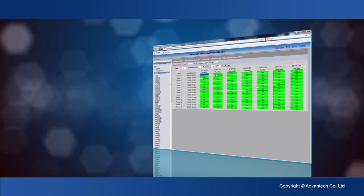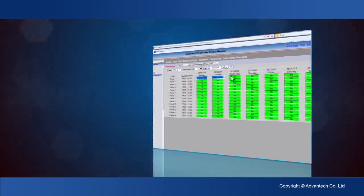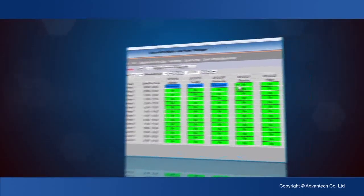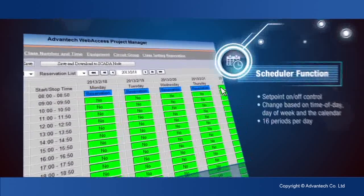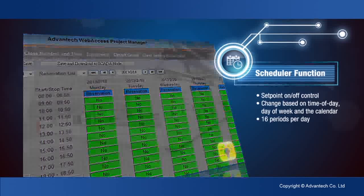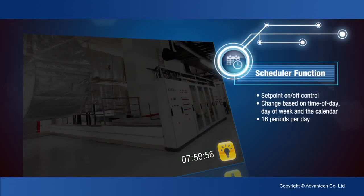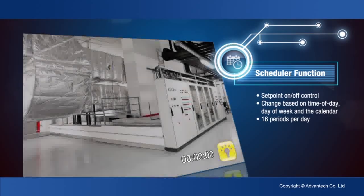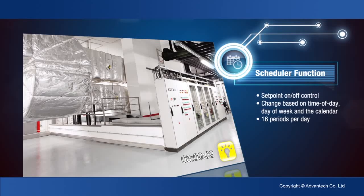Web Access scheduler function provides on-off control based on the time of day, day of week, and the calendar. Users can control lights, temperature, and equipment for saving energy during specific days and times.